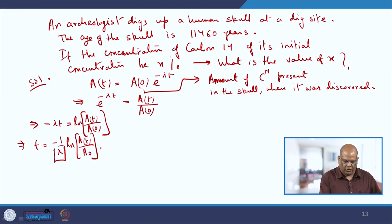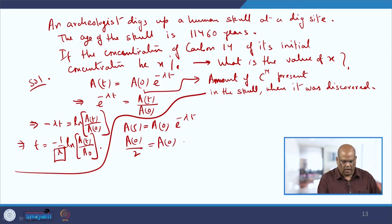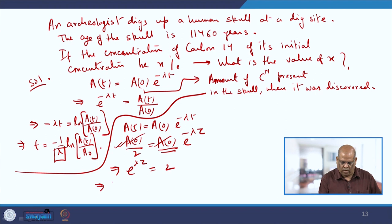We need to express λ in terms of the half-life. The half-life τ is the time in which the initial concentration reduces to half, giving e^(λτ) = 2, so λτ = ln 2 and therefore λ = ln 2 / τ.